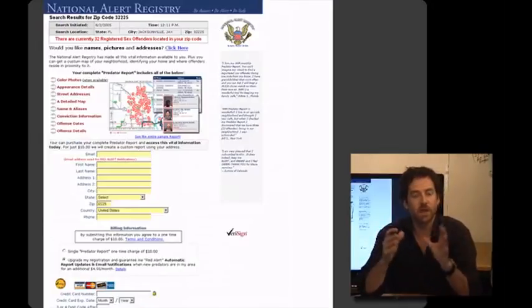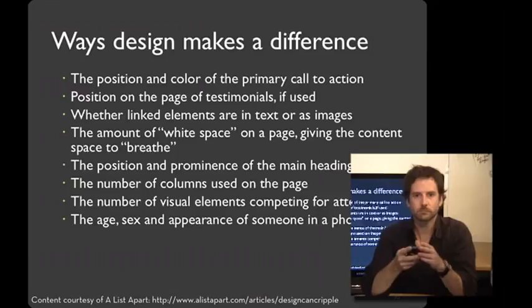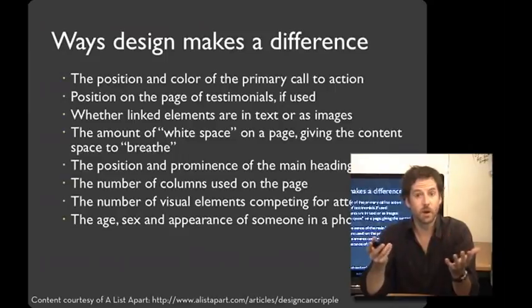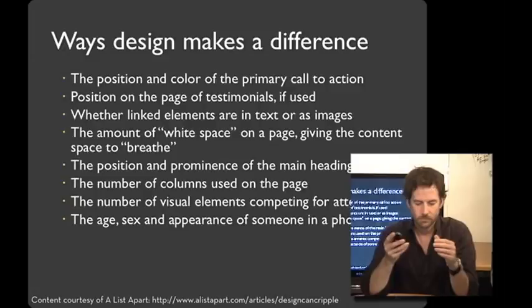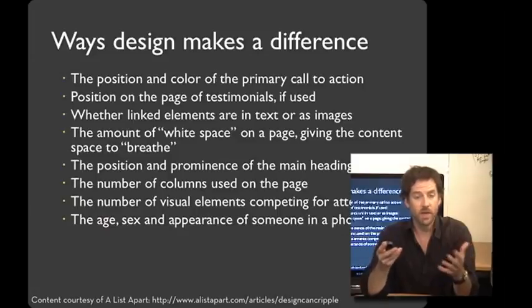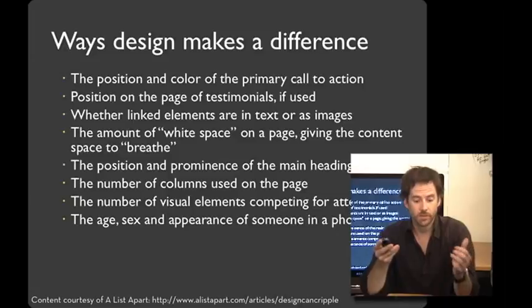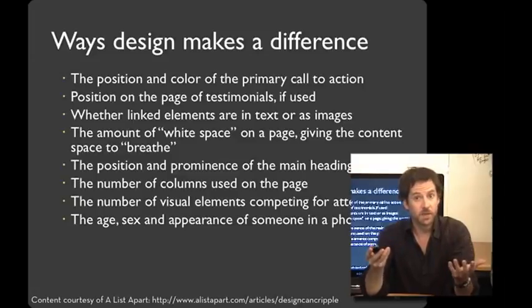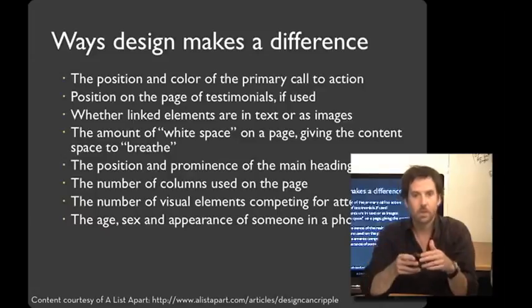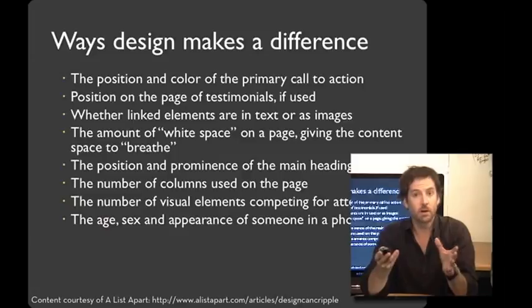By contrast, version B, which did the best, doesn't have 'free' up top and has a much stronger call to action. What we see in this example from A List Apart is that small changes in design can make a significant difference in the effectiveness of a site. These can include things like the position and color of the primary call to action, where testimonials are used, how links and images are conveyed, how much white space a page has, where the main heading is and how prominent it is, how many columns a page uses, what visual elements are competing for attention, and what's going on in the photos. In this lecture, we're going to look at techniques for measuring whether the outcome is the one you want.